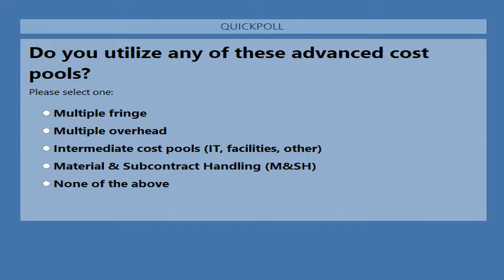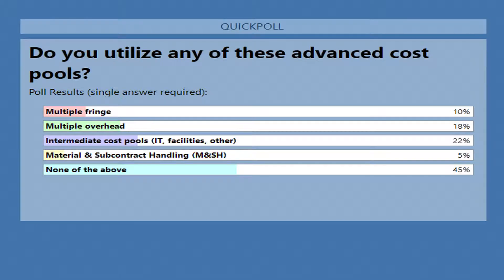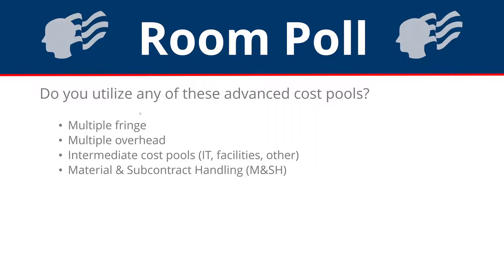Poll three asked: do you utilize any of these advanced cost pools? Interestingly, about 50% said none of the above. We saw a few saying multiple fringe — we don't usually see much of that. We're seeing some multiple overhead and intermediate cost pools. For those who said none, I'd be curious how many of you think, after this presentation, that you need to implement these in your organization.